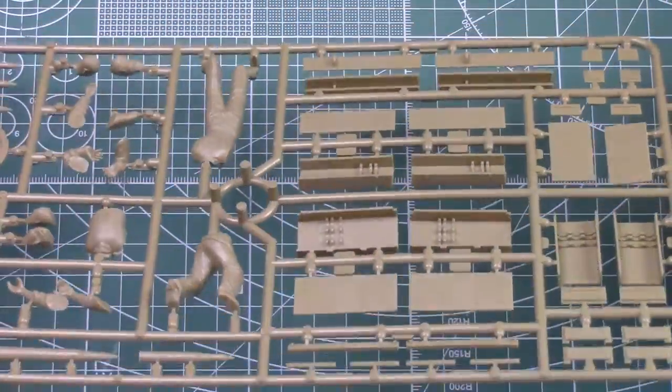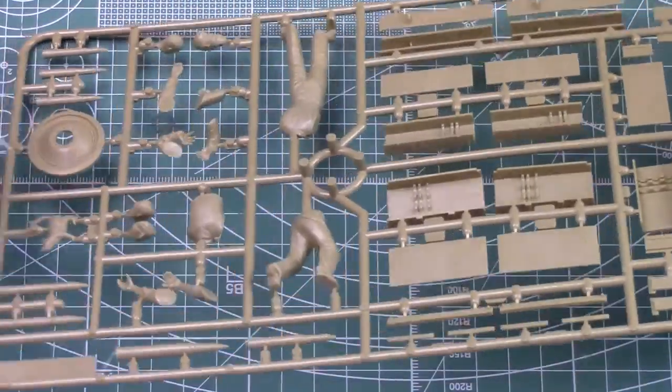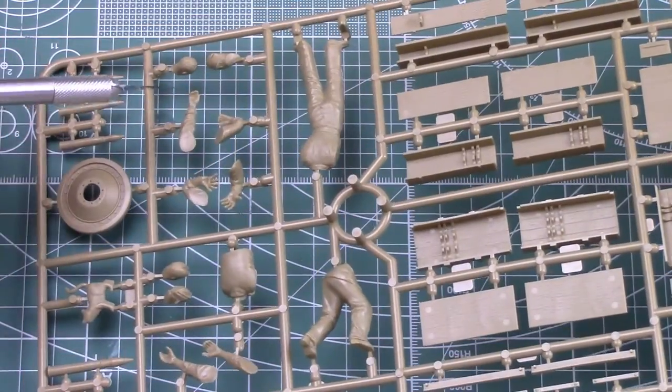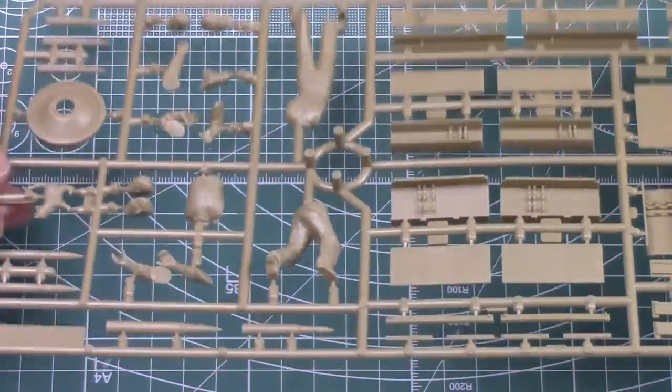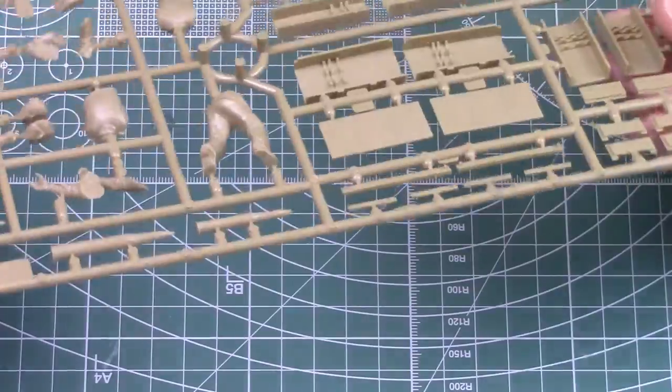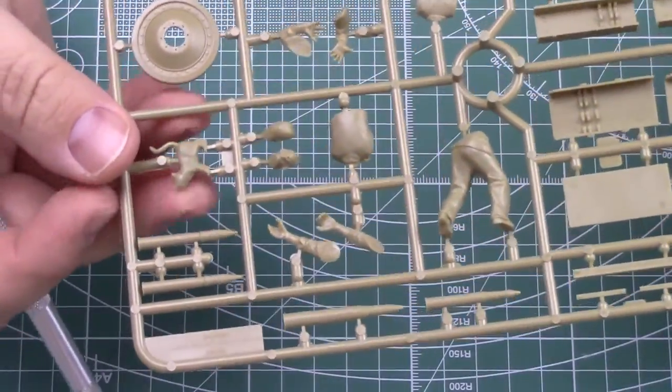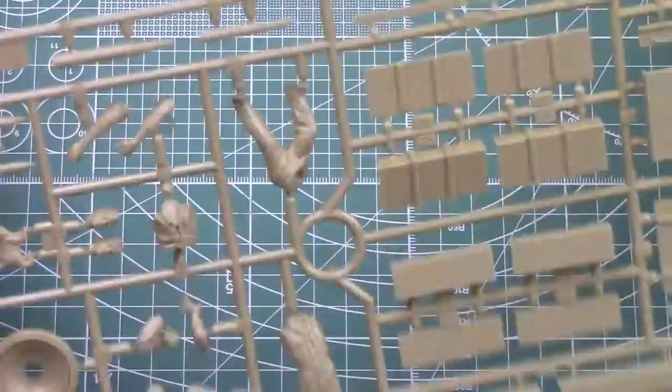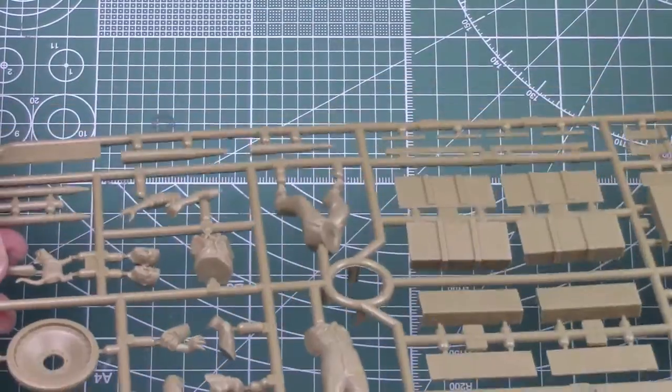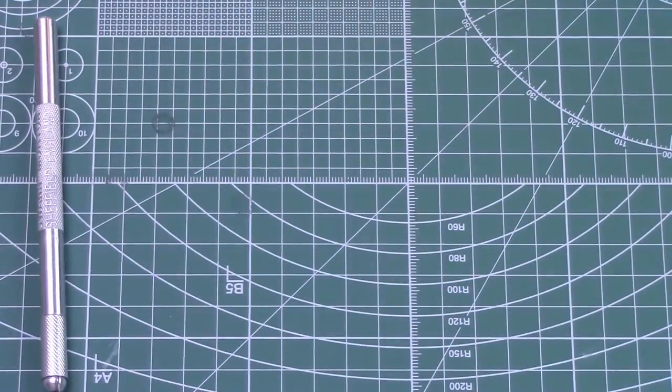This is the Tamiya sprue included with the kit, all nice crisp detail. There is just a touch of flash around some of the figure parts although that will clean up nicely enough. And there's a kitty cat - you gotta be kidding me, I didn't see that. There's a kitty cat right there.